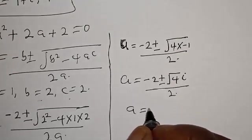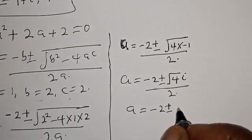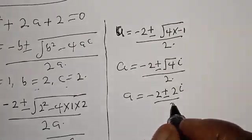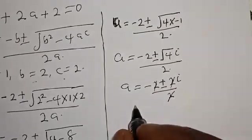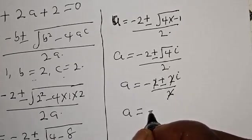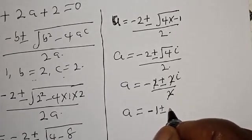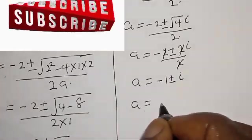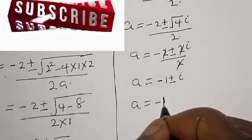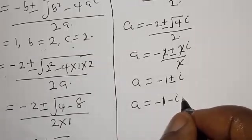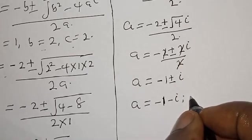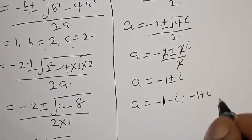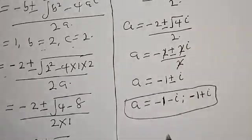Therefore a is equal to minus 2 plus or minus 2i, over 2. Cancelling, we have a equal to minus 1 plus or minus i. Therefore the final answer for this second case is a equal to minus 1 minus i, or minus 1 plus i. Those are the roots for the second case.